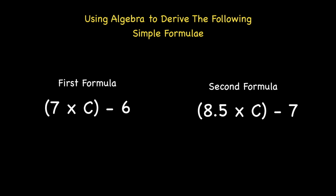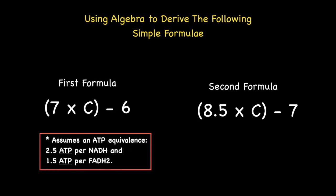Let's get started with the first formula, which assumes an ATP equivalence of 2 ATPs per NADH and 1.5 ATPs per FADH2. Let's begin with a mathematical expression that gives the total ATPs produced from all the acetyl-CoAs generated from the complete beta-oxidation of a fatty acid. Note, the letter C in the following mathematical expressions represents the number of carbons within the saturated fatty acid. C over 2 multiplied by the number 10.